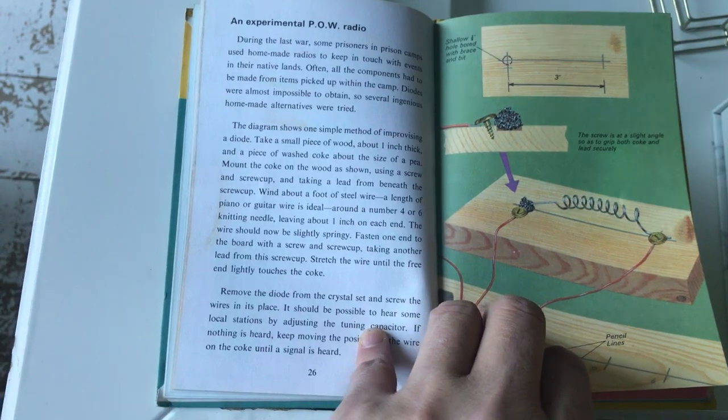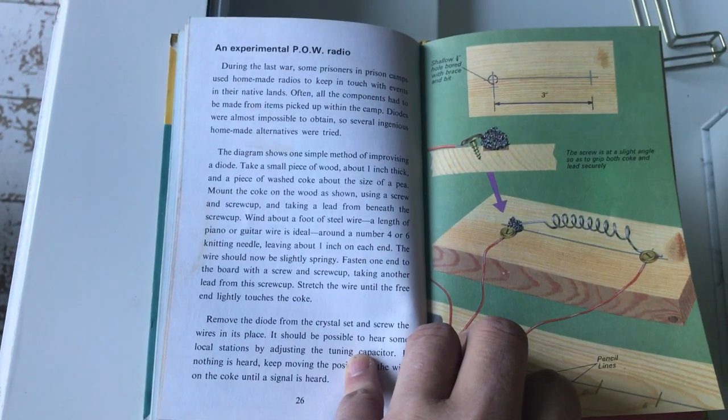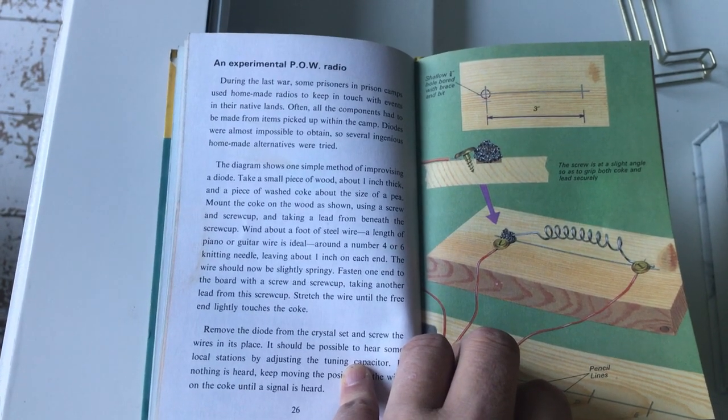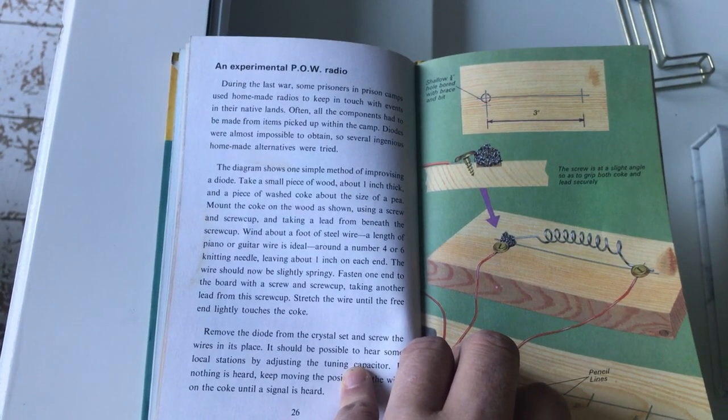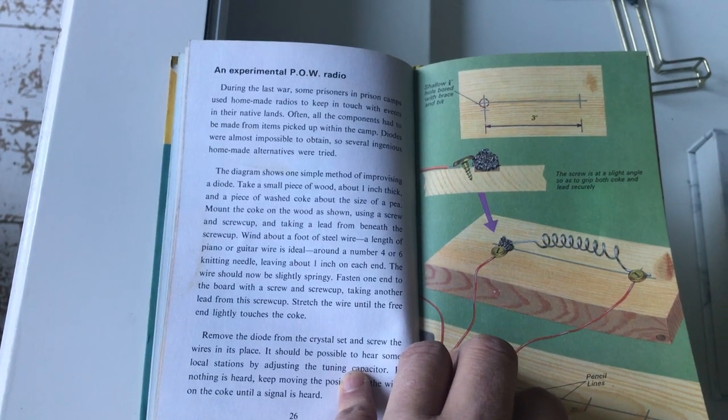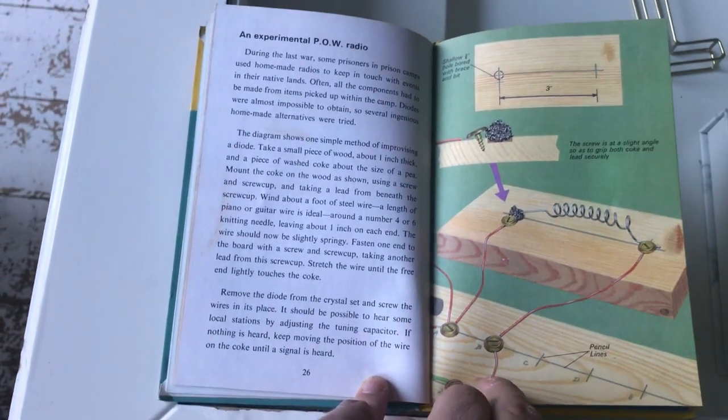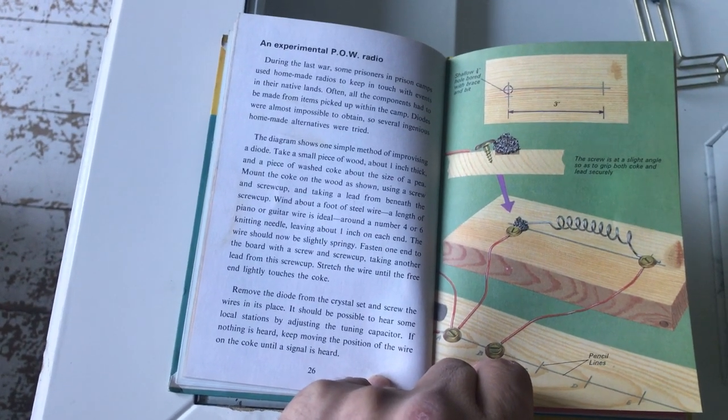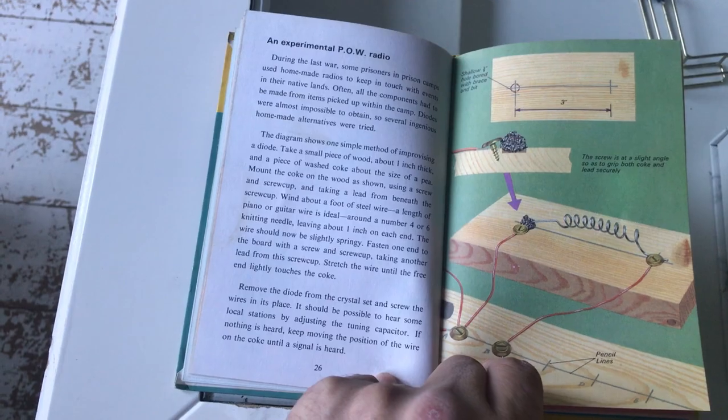Where if you don't have access to a diode, you can effectively make one by using a small piece of clean coke and a simple contact. I thought that was incredible as well, that you can actually make a diode rather than one of these germanium ones, whatever the designation was.